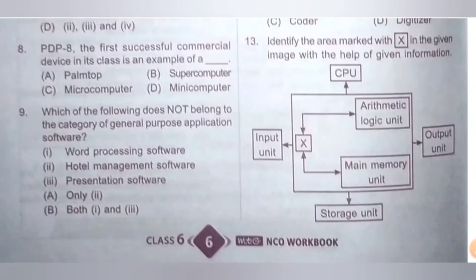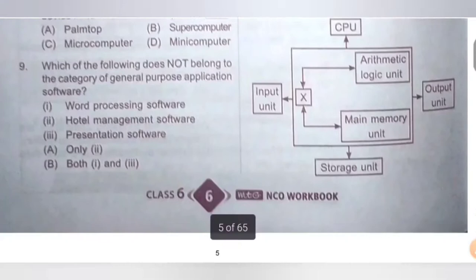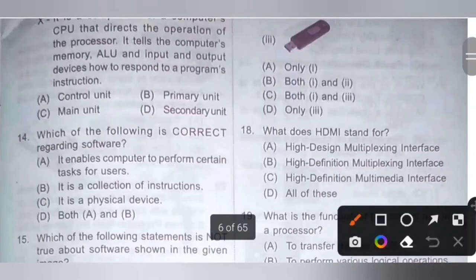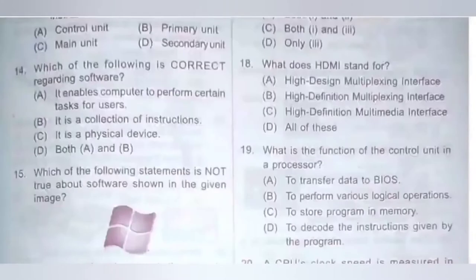Question 13: Identify the area marked with X in the given image. X is a component of the computer's CPU that directs the operation of the processor. It tells the computer's memory, ALU, and input and output devices how to respond to a program's instructions. Options: A. Control unit, B. Primary unit, C. Main unit, D. Secondary unit. Option A, Control unit, is the correct answer.